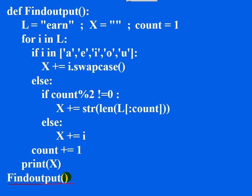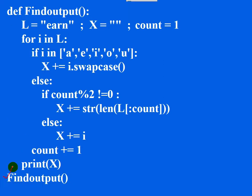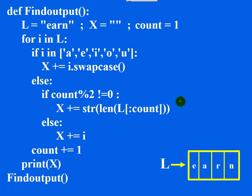The first line in the main function is a function call, because when this symbol is encountered, understand that it is a function. On encountering a function call, control finally reaches the point where the function is defined — which means from here, the control comes here. Inside the function, L is equal to the string 'EARN'. So your variable L is pointing to this string.